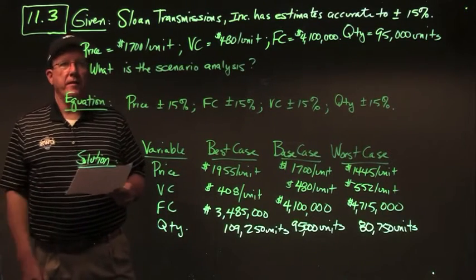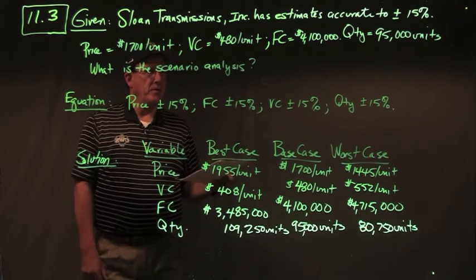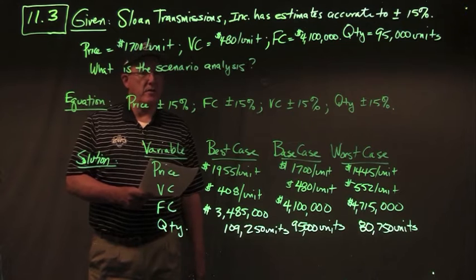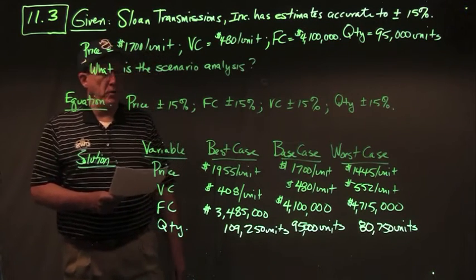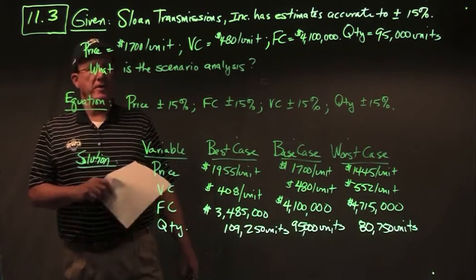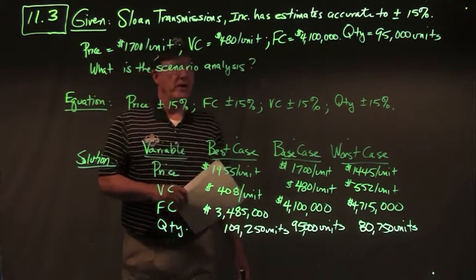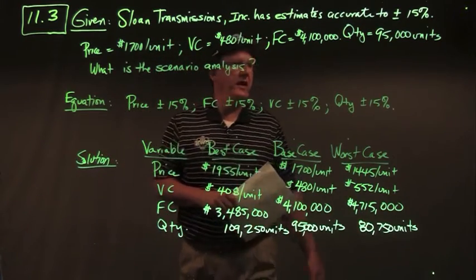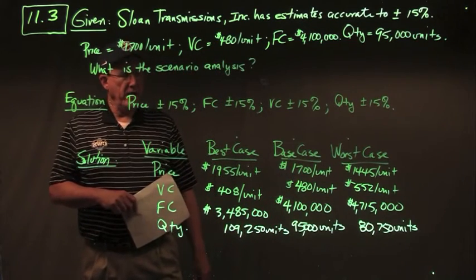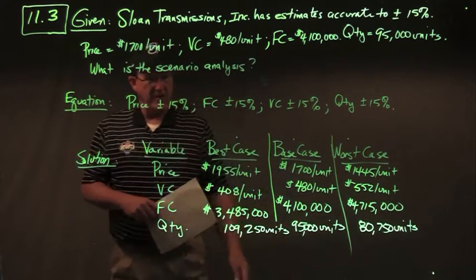In problem 11.3, Sloan Transmissions Incorporated has estimates accurate to plus or minus 15% and wants scenario analysis. We find their best case, base case, and worst case. Base case: price is $1,700 per unit, variable cost $480 per unit, fixed cost $4.1 million, quantity 95,000 units. We draw up the base case first, then best case and worst case.